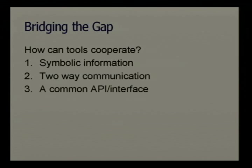So how do we bridge this gap? How do we make these tools work better together as a cohesive unit? The first step is symbolic information — you want all your annotations from IDA in your debugger and vice versa. But that's only one-way communication: you're taking data from the disassembler and bringing it to the debugger. Step two is two-way communication — you want to take information from the disassembler to the debugger and back again, creating a loop where we feed information from runtime that we don't have access to during static analysis.